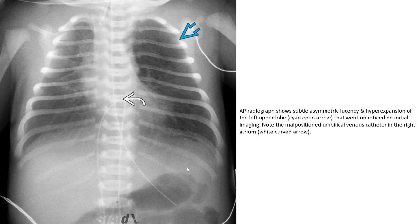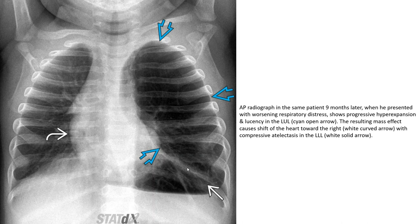AP radiograph shows asymmetry, lucency, and hyperexpansion of the left upper lobe that went unnoticed on initial imaging. Note the malpositioned umbilical venous catheter in the right atrium. In the same patient nine months later, when presenting with worsening respiratory distress, there is progressive hyperexpansion and lucency in the left upper lobe, with the resulting mass effect causing shift of the heart toward the right with compressive atelectasis.